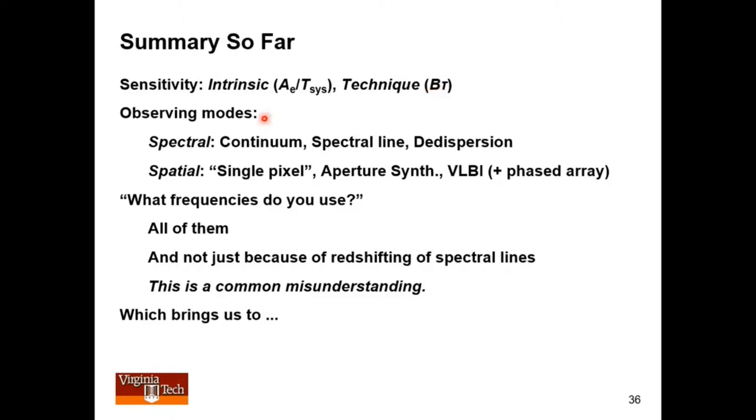This number also has to be considered, and it is complicated because we have all these different observing modes. You now know that there's continuum sources, spectral line sources, and pulsars. We have this dispersion thing. They're all very different utilizations of the time-frequency plane. Similarly, for spatial dimension, we have single pixel stuff, which is what the GBT does most of the time, aperture synthesis, which is what the VLA does, and VLBI, which is what the VLBA does. And just to throw in yet another mode, it's pretty common now to take all those dishes and phase them up as a phased array.